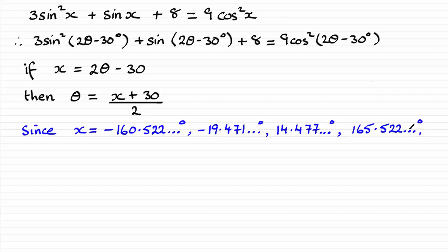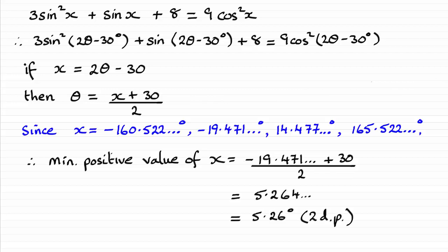So, if we're looking for that smallest positive solution for theta, then it's clearly going to come from the negative 19.471. So that when you do minus 19.471 plus 30 divided by 2, you end up with the minimum positive value and it turns out to be 5.264 and so on, which when rounded to two decimal places, is 5.26 degrees.